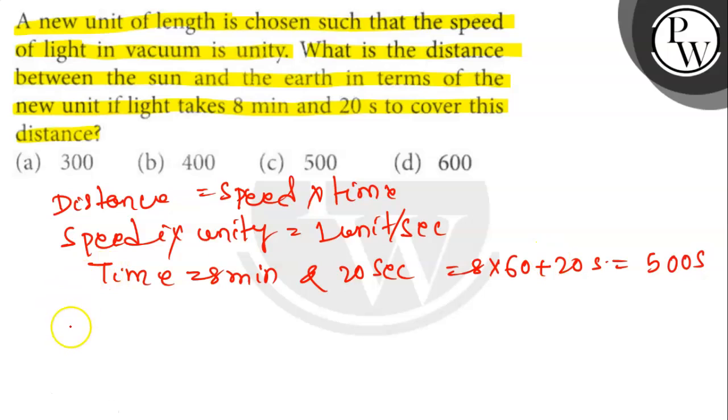Plug the values. We get distance between sun and earth is 1 into 500, which is 500 units. Option C is the right answer. Thank you.